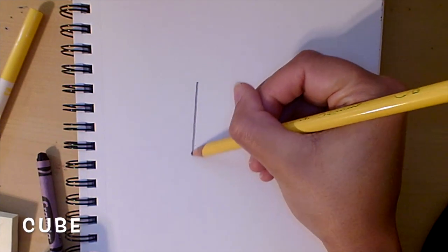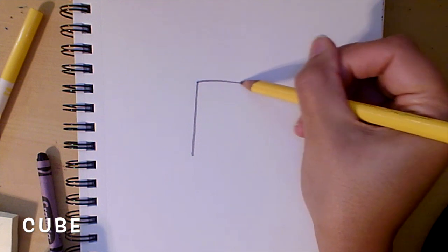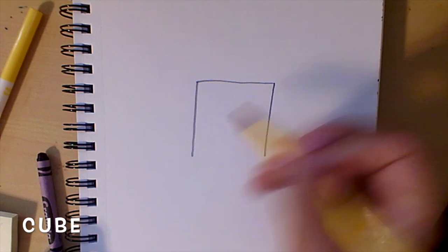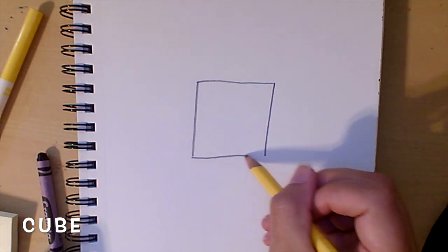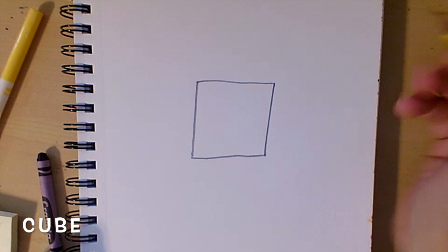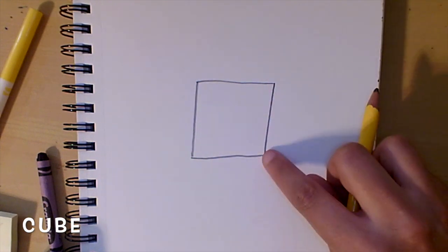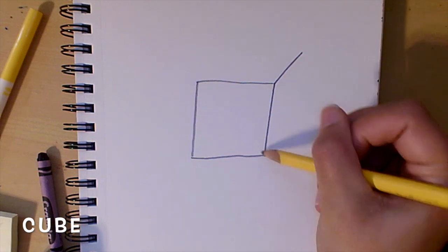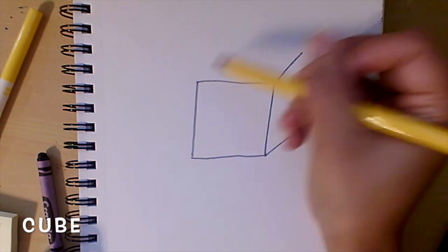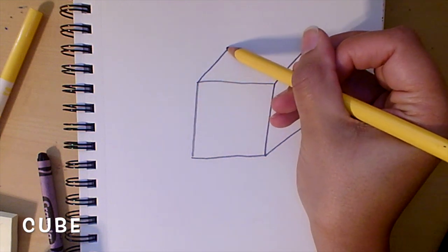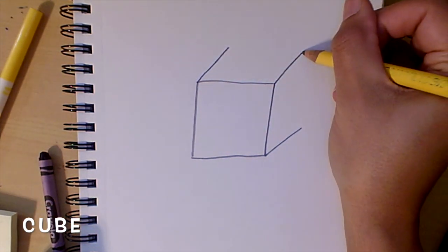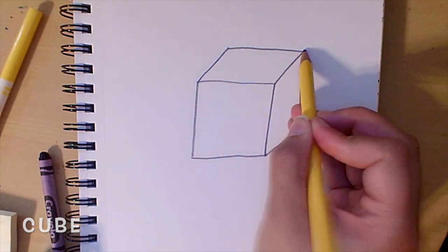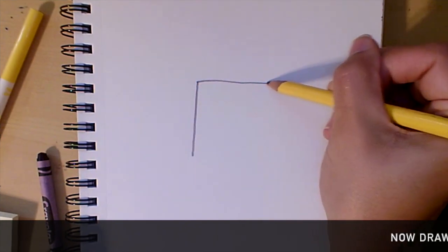Cube. First, make two angle lines together to create a square. Next, pick three corners to create three identical diagonal lines. Lastly, connect them together with a vertical line and a horizontal line. Now, draw your own cube.